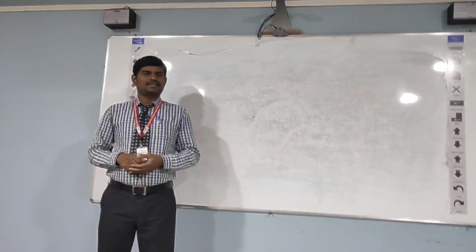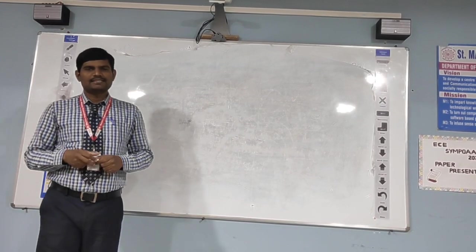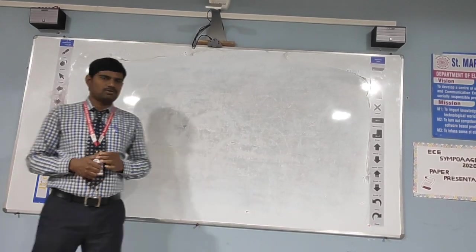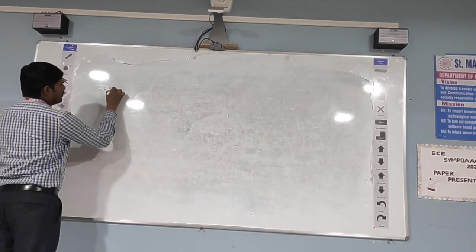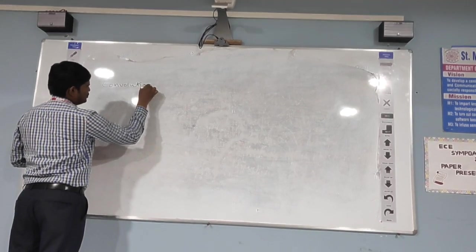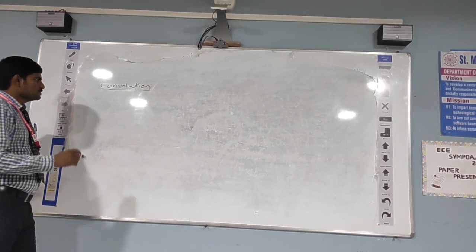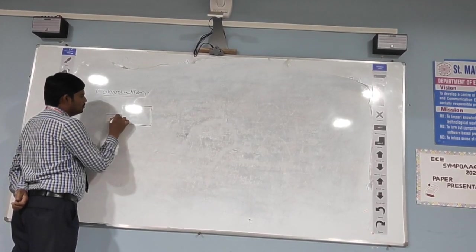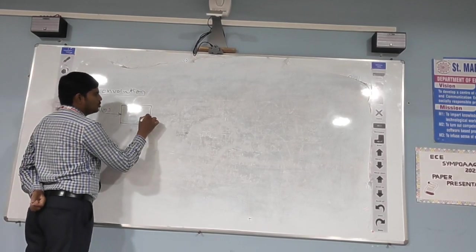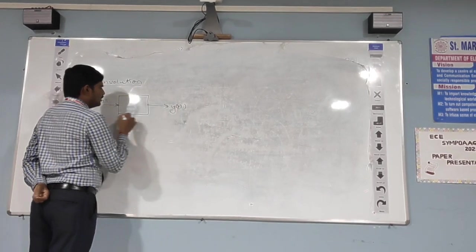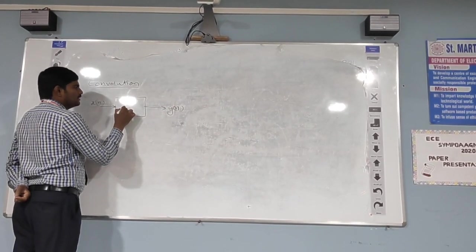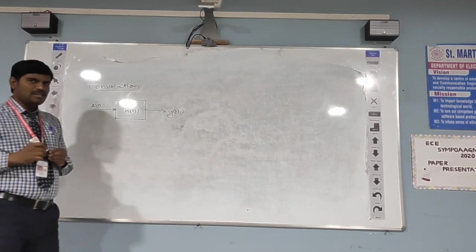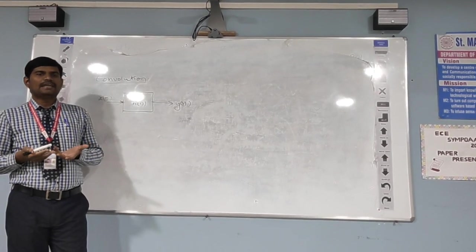I am working as associate professor in the department of ECE. Today I am going to explain about convolution in digital signal processing — convolution and its various types. Let us consider a discrete time system with input x(n) and output y(n) with impulse response h(n). Generally, convolution means we think of it as a mathematical relation.